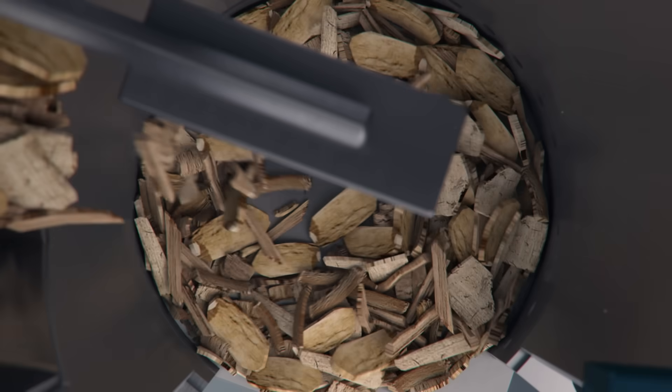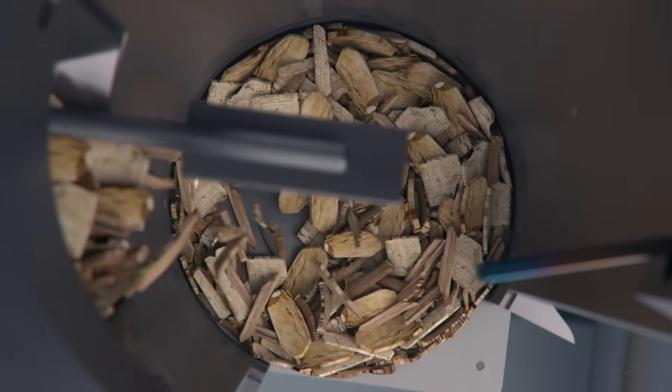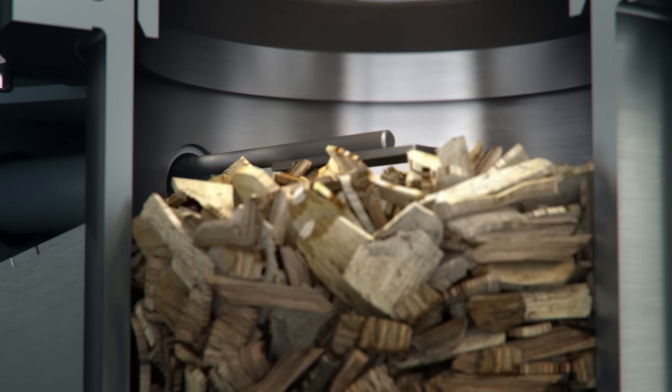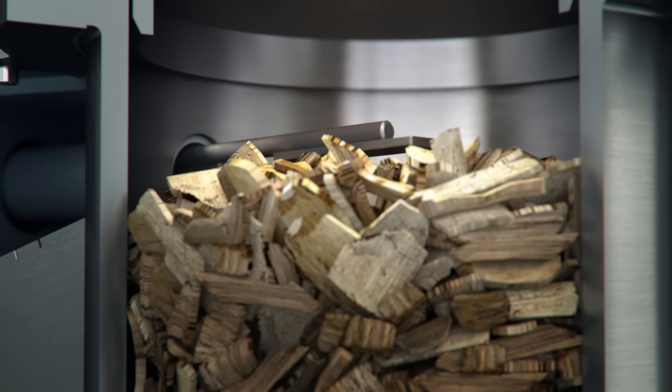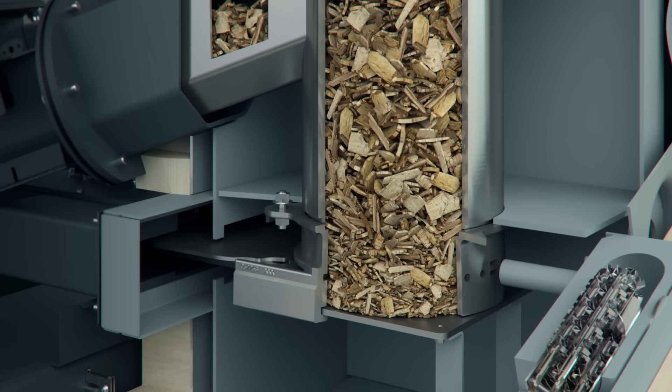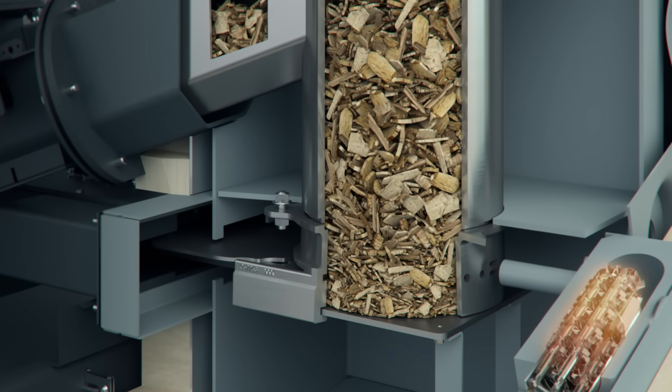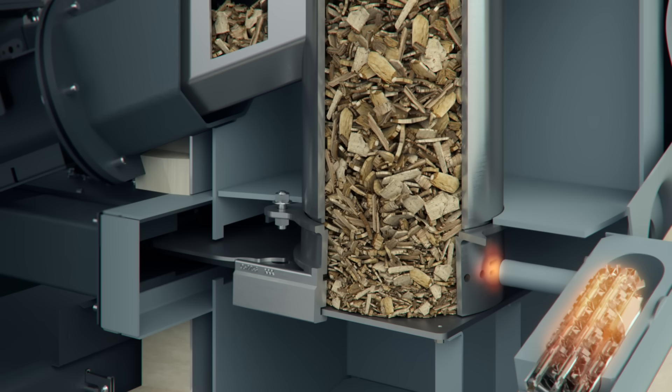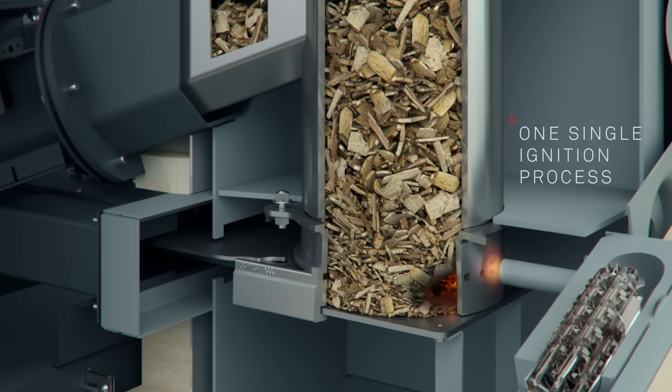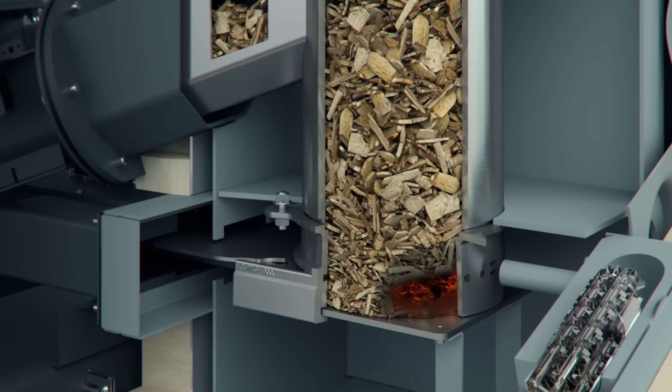Firstly, the complete combustion chamber is filled with wood chip. Supply of primary air and one single ignition process produces an ember bed in the bottom section. The heat of the ember bed carbonizes the wood chip above it.